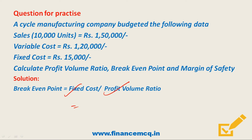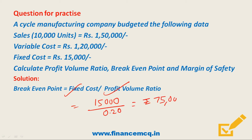Next, we calculate the Breakeven Point. BEP = Fixed Cost divided by Profit Volume Ratio. Fixed Cost is ₹15,000 and PVR is 20%. Therefore, BEP = 15,000 divided by 0.20 = ₹75,000.